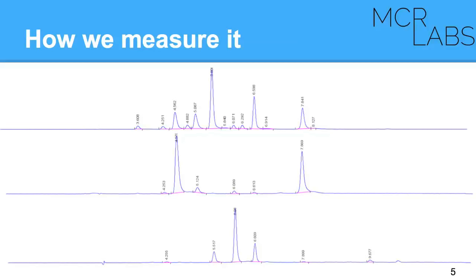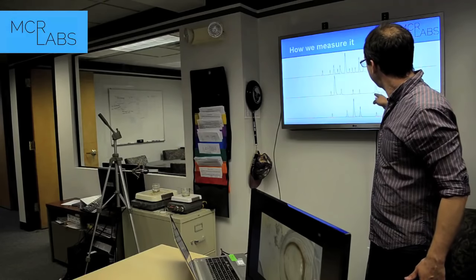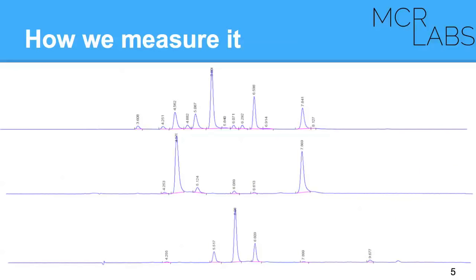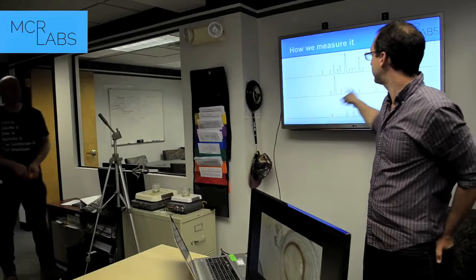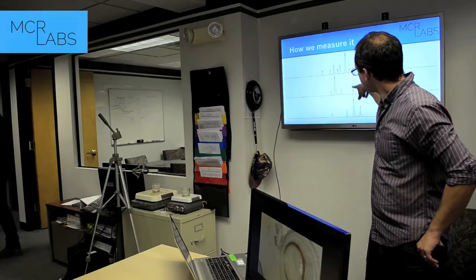The size of each peak indicates how much of that molecule is present. If somebody brought us a flower sample, what we see is this molecule — THCA — and this molecule — CBDA. This is close to a one-to-one CBD-to-THC flower. There's very little THC compared to the THCA and CBDA in the flower, because the flower doesn't produce THC — it produces THCA.